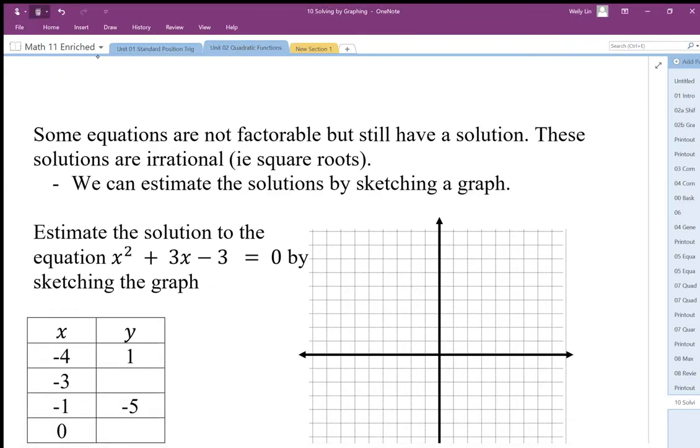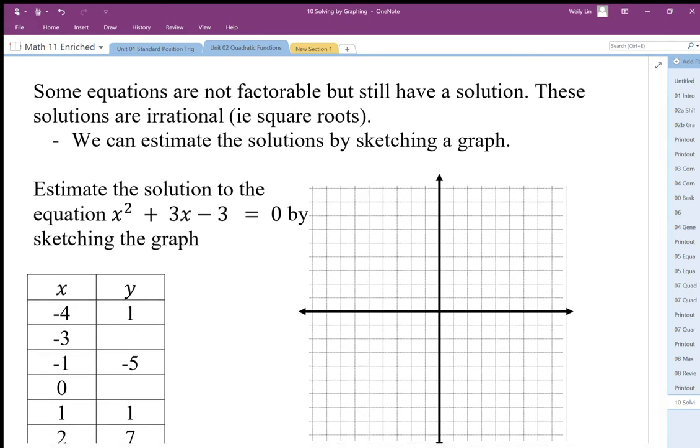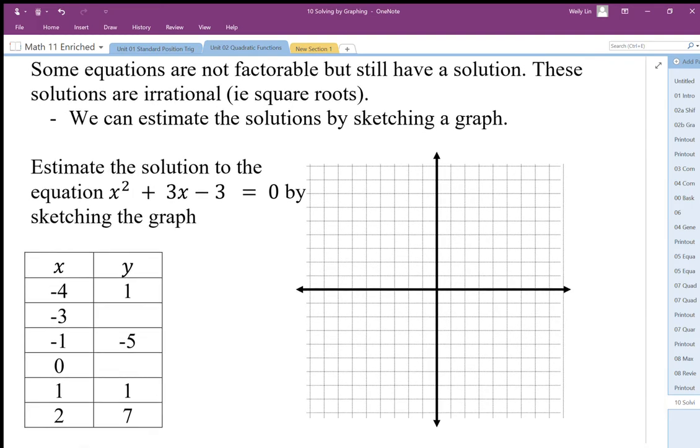Some equations are not factorable but still have a solution, and these solutions are irrational solutions. We can find these and estimate these by sketching the graphs. For example, we have an equation here: x squared plus 3x minus 3 equals 0.